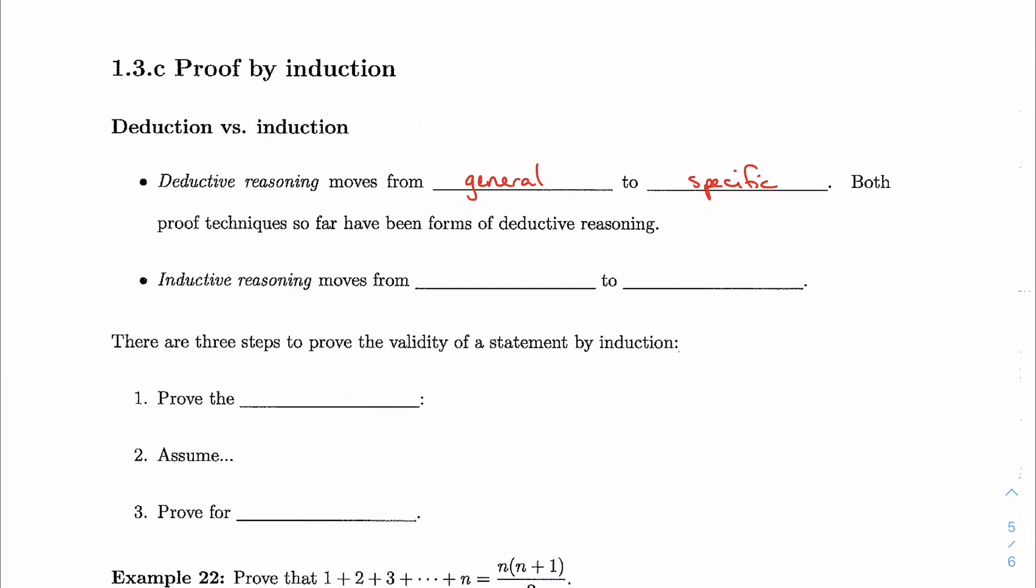Inductive reasoning does the opposite. We start with a specific case, a specific observation, and try to generalize it, and we'll see this in a minute.